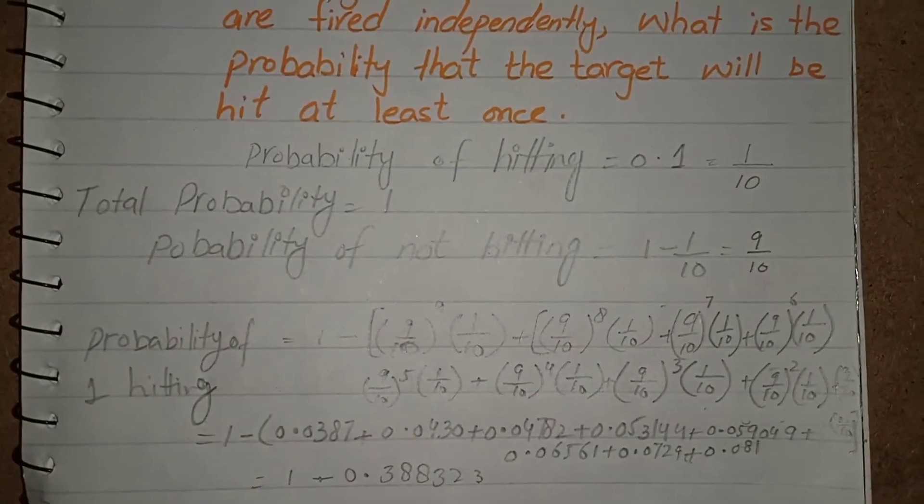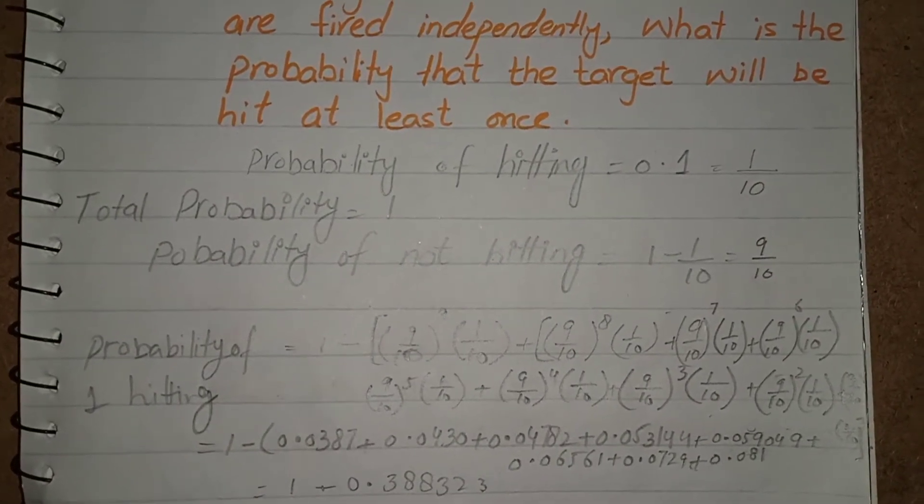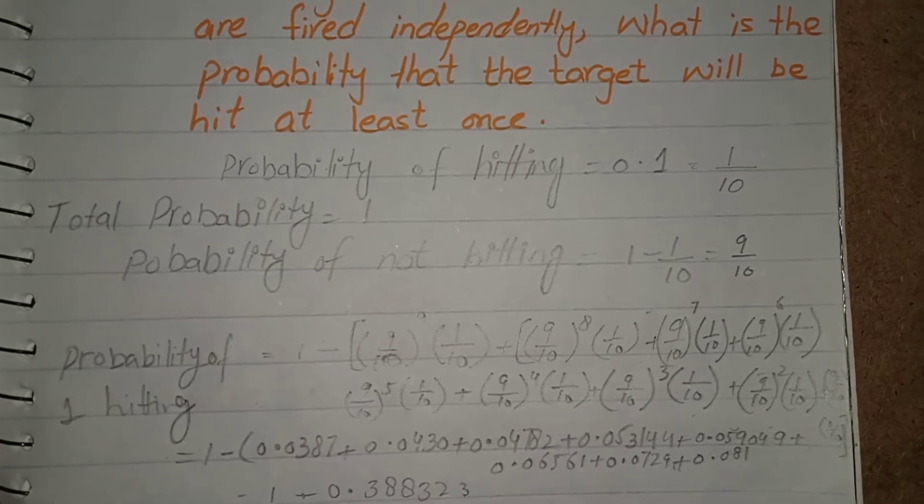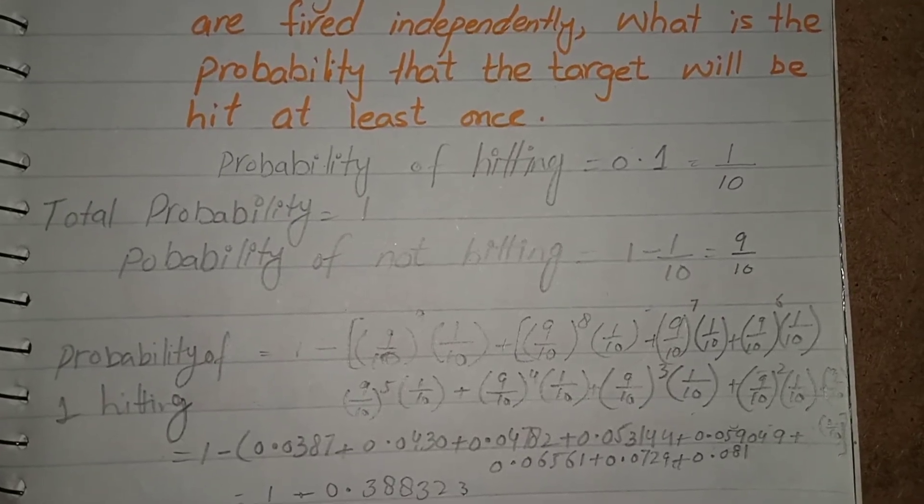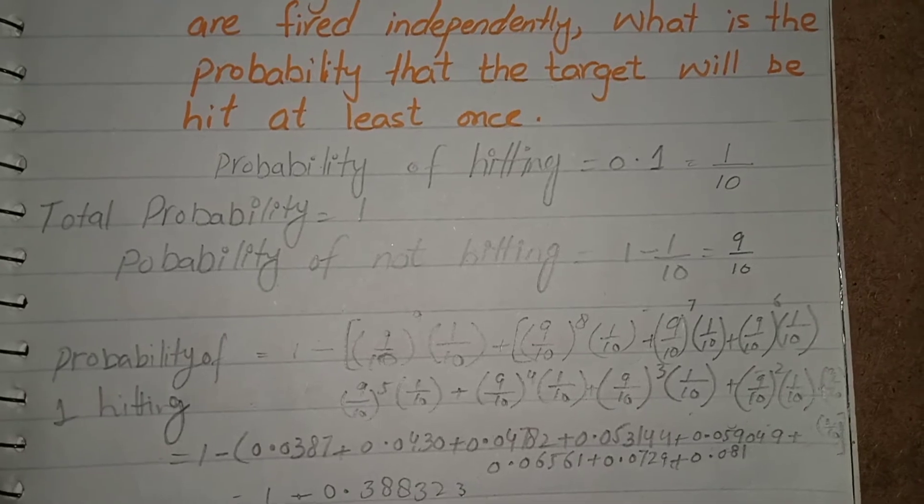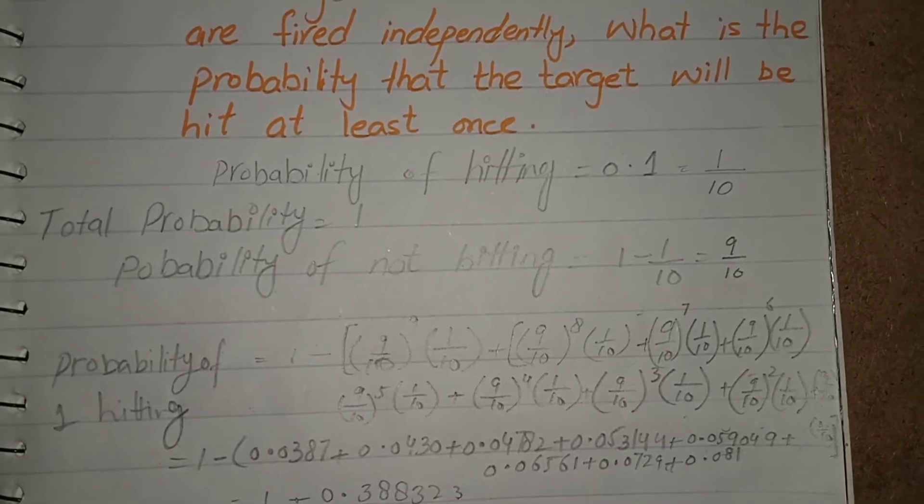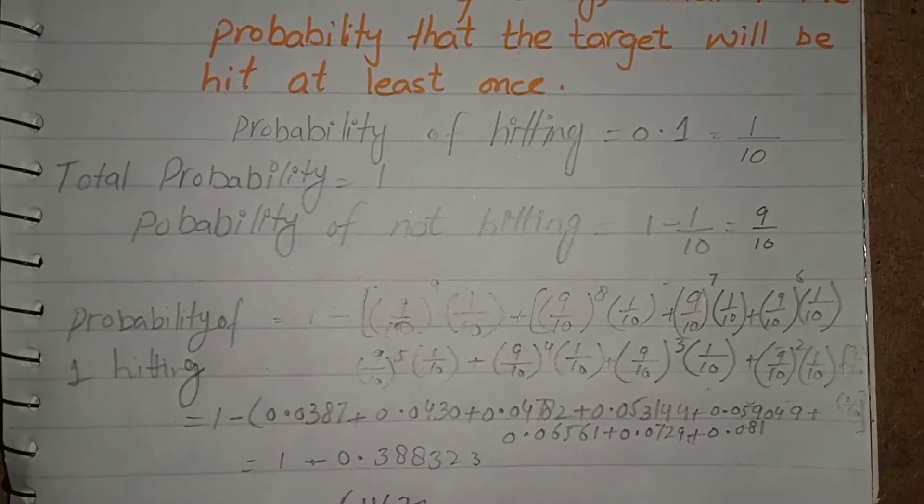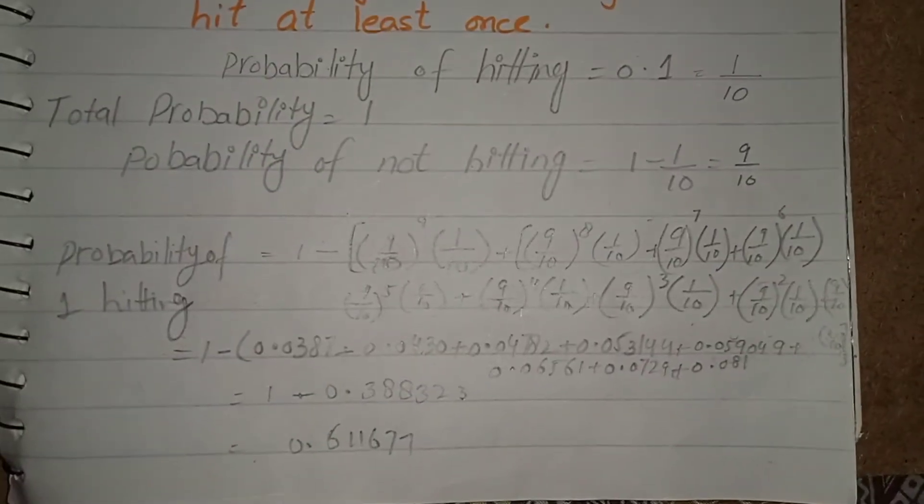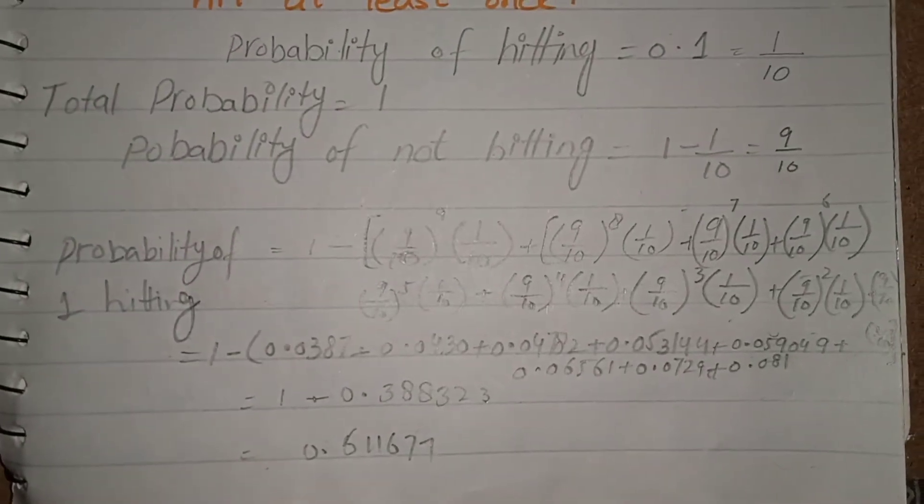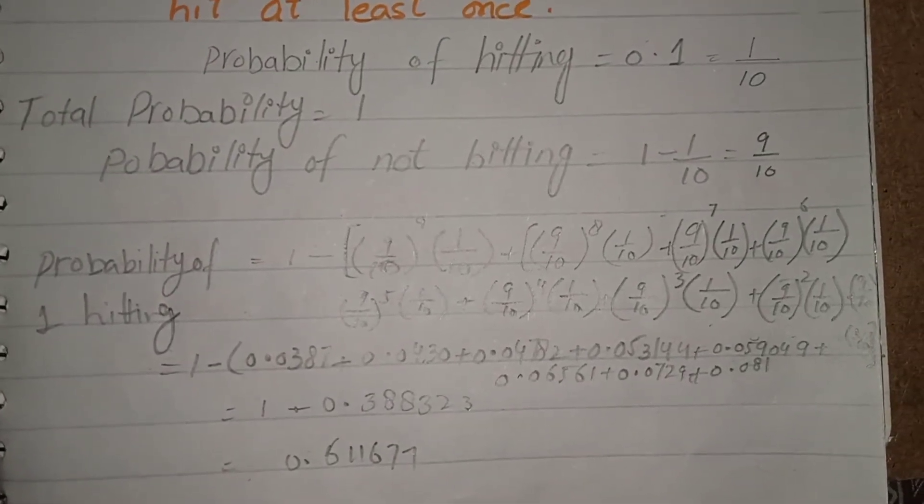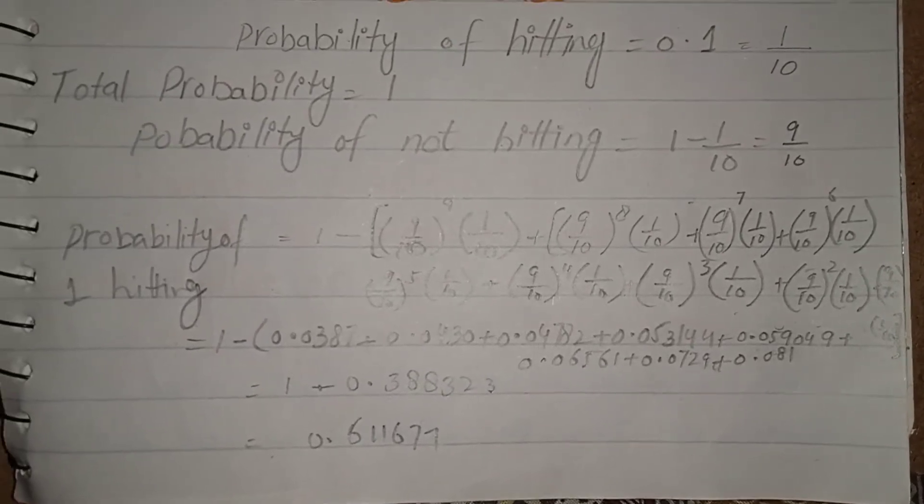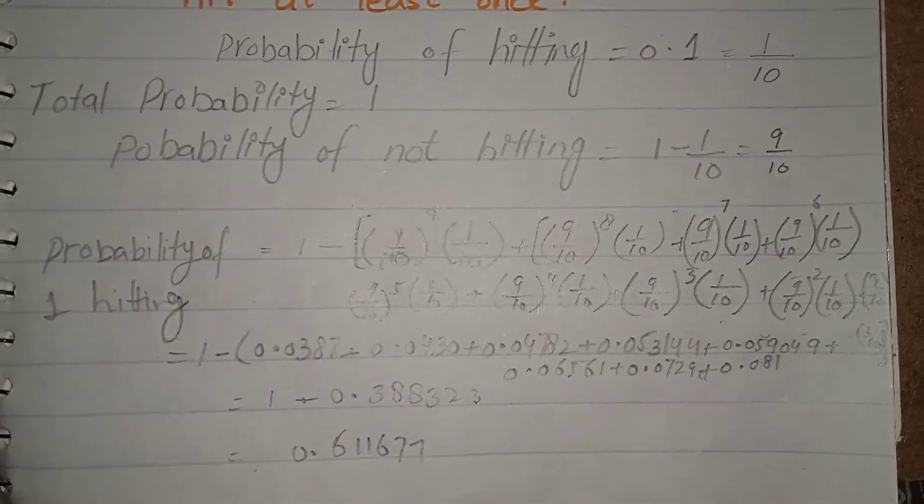So at first I find the probability of not hitting, as the probability of hitting shot is given which is 0.1 or you may say that 1 over 10. The total probability for every event is 1. So I subtracted the hitting probability to get the not hitting probability. And after that I subtracted all the not hitting 9 probabilities from the actual hitting 1 probability to get the answer.